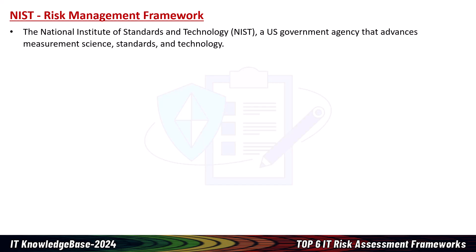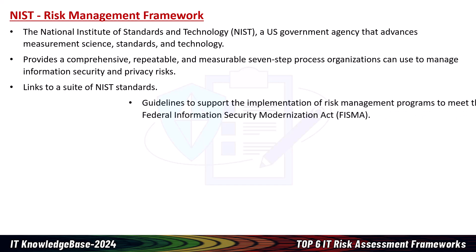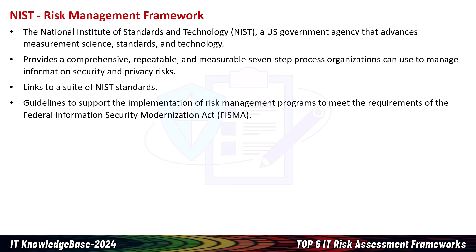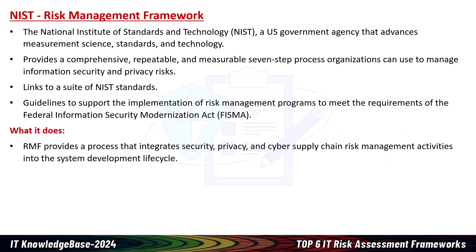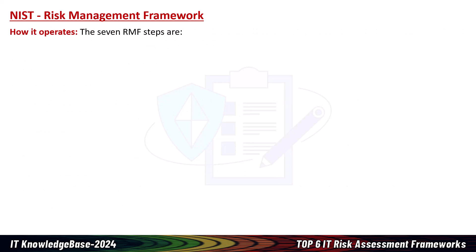Number four: the NIST Risk Management Framework, or RMF, from the National Institute of Standards and Technology — a U.S. government agency — provides a comprehensive, repeatable, and measurable seven-step process organizations can use to manage information security and privacy risk. It links to a suite of NIST standards and guidelines to support implementation of risk management programs meeting the requirements of the Federal Information Security Modernization Act, or FISMA. The RMF provides processes that integrate security, privacy, and cyber supply chain risk management activities into the system development life cycle. The risk-based approach to control selection considers effectiveness, efficiency, and constraints due to applicable laws, directives, executive orders, policies, standards, or regulations.